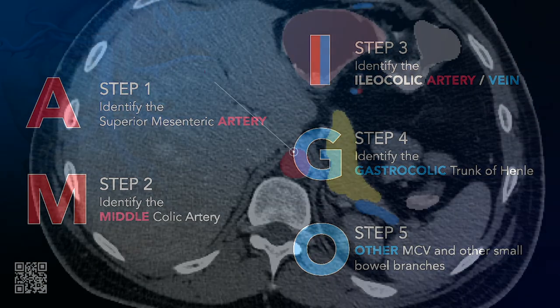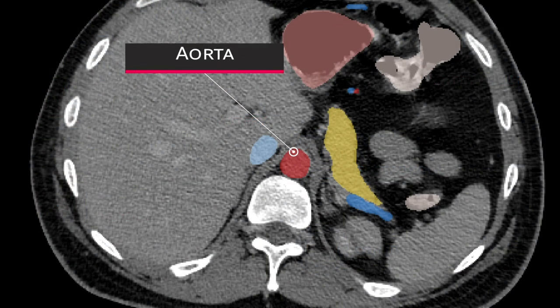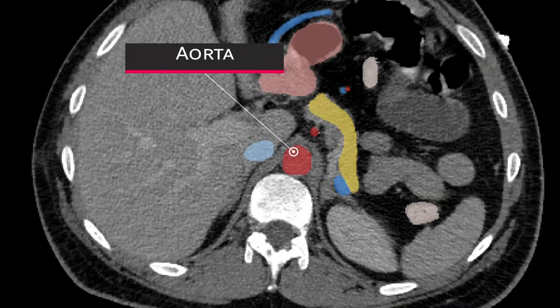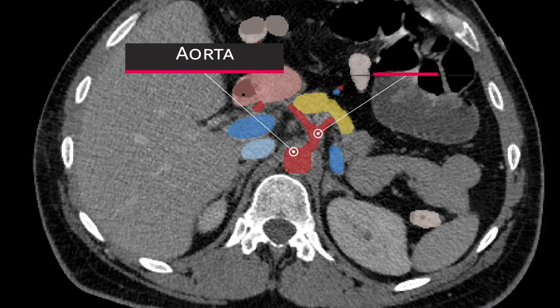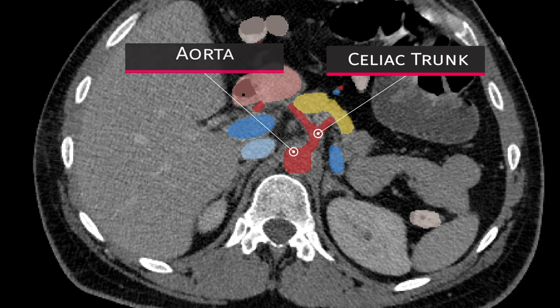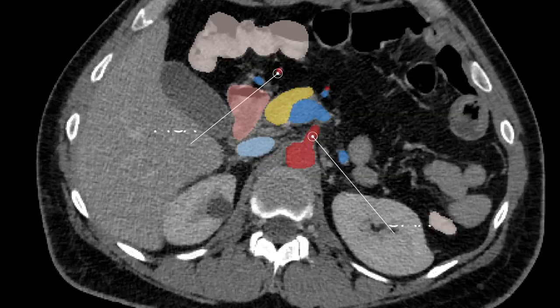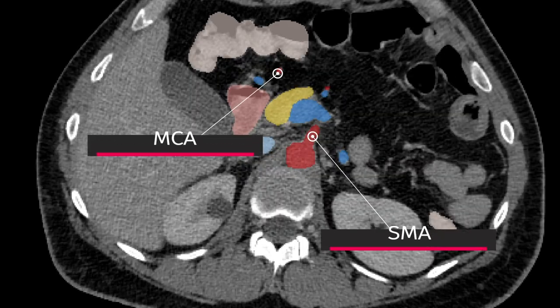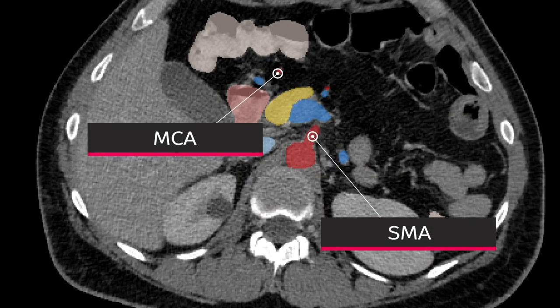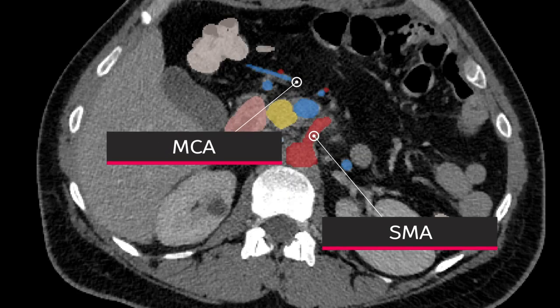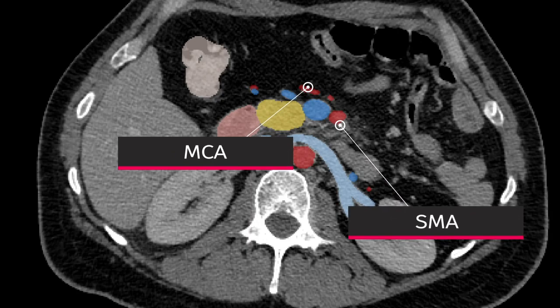After identifying the aorta, we follow cranially to identify the SMA, which arises anteriorly off the abdominal aorta just inferior to the celiac trunk. We then trace the course of the SMA until we identify the origin of the middle colic artery, typically found emerging distal to the inferior border of the pancreas.